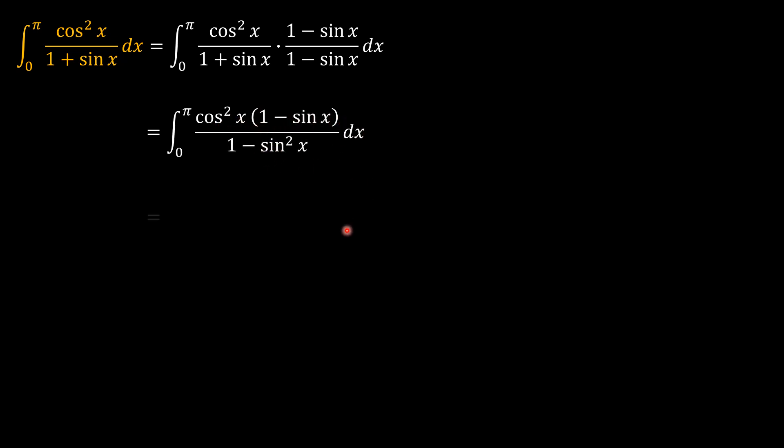So 1 minus sine squared x is the same as cosine squared x. And so the cosine squared x in the numerator and denominator cancel out.